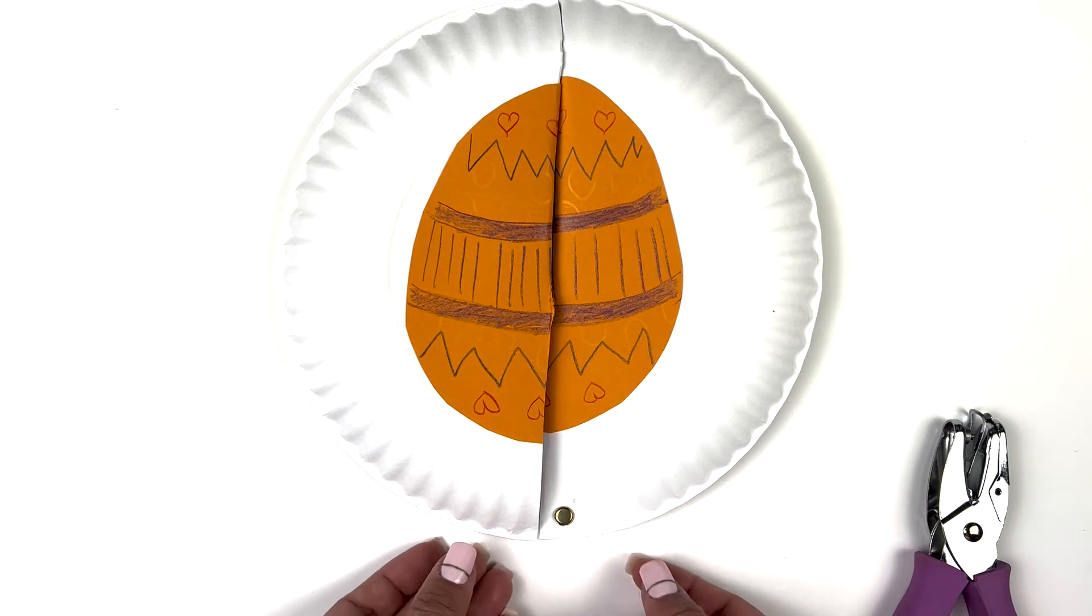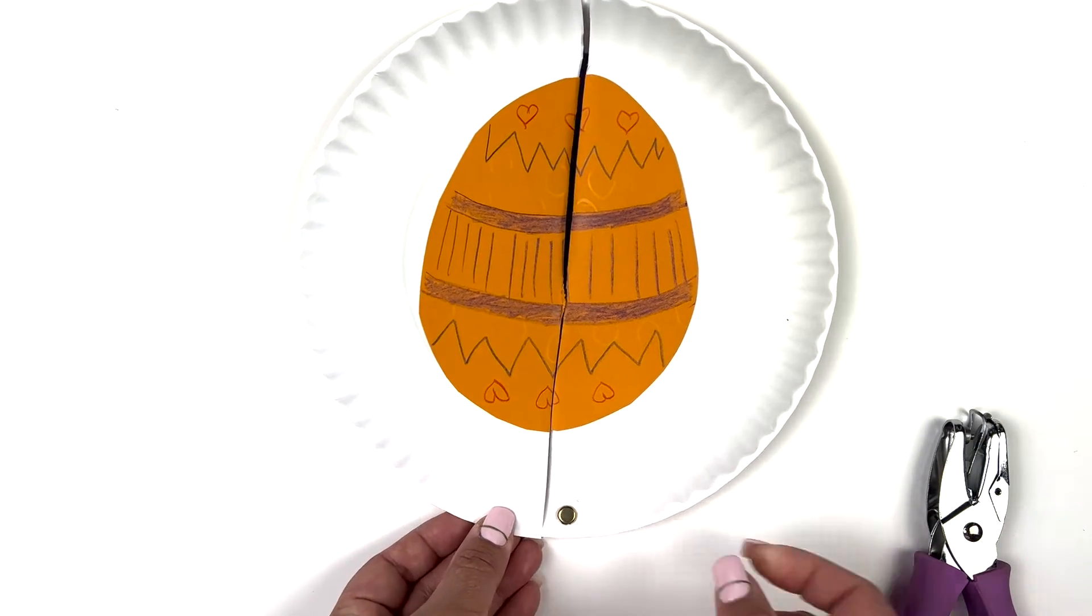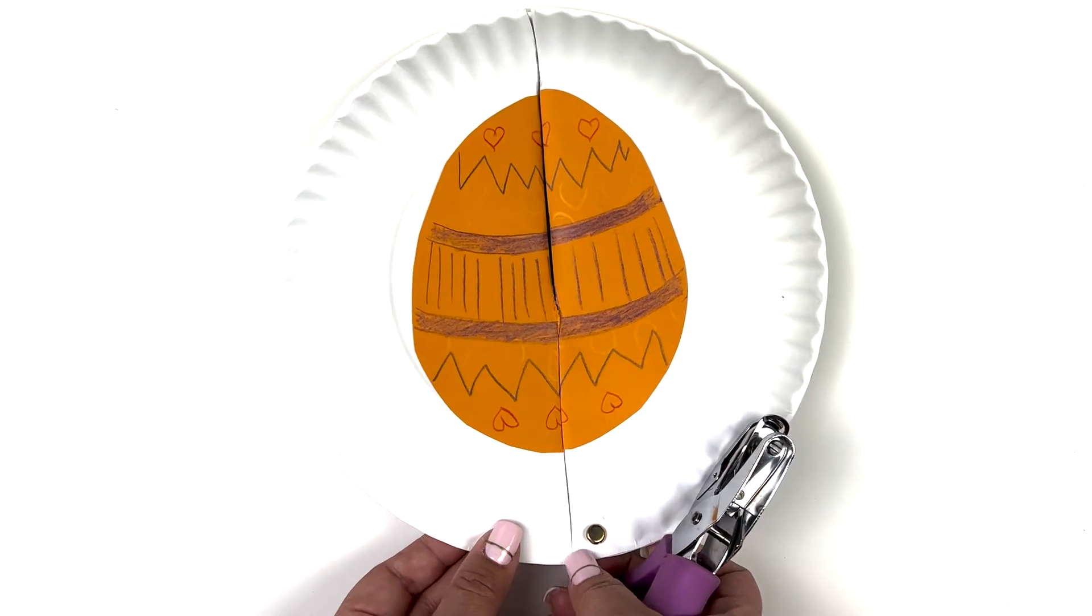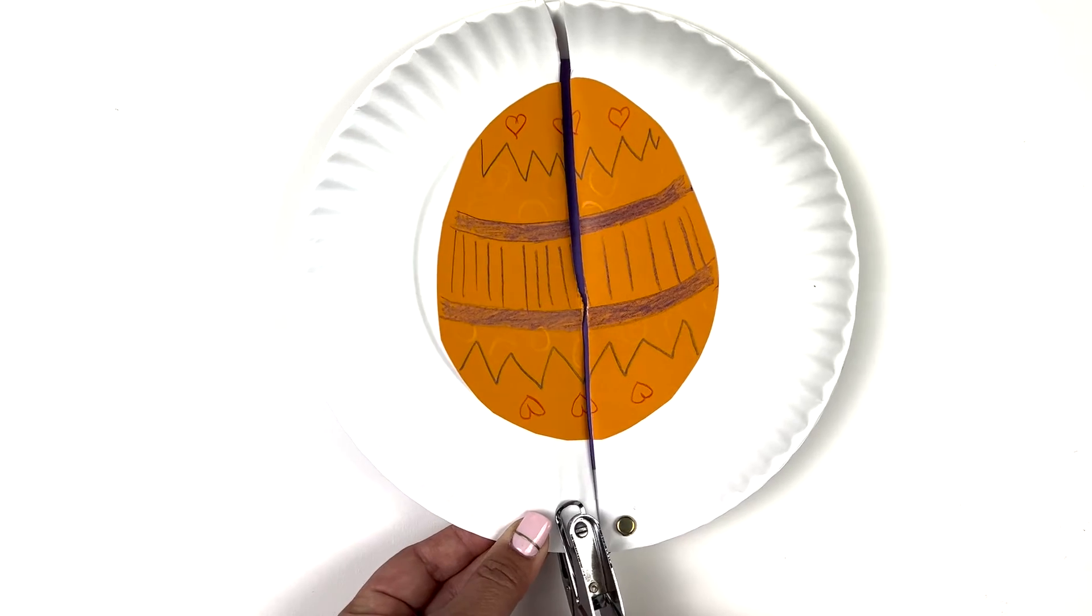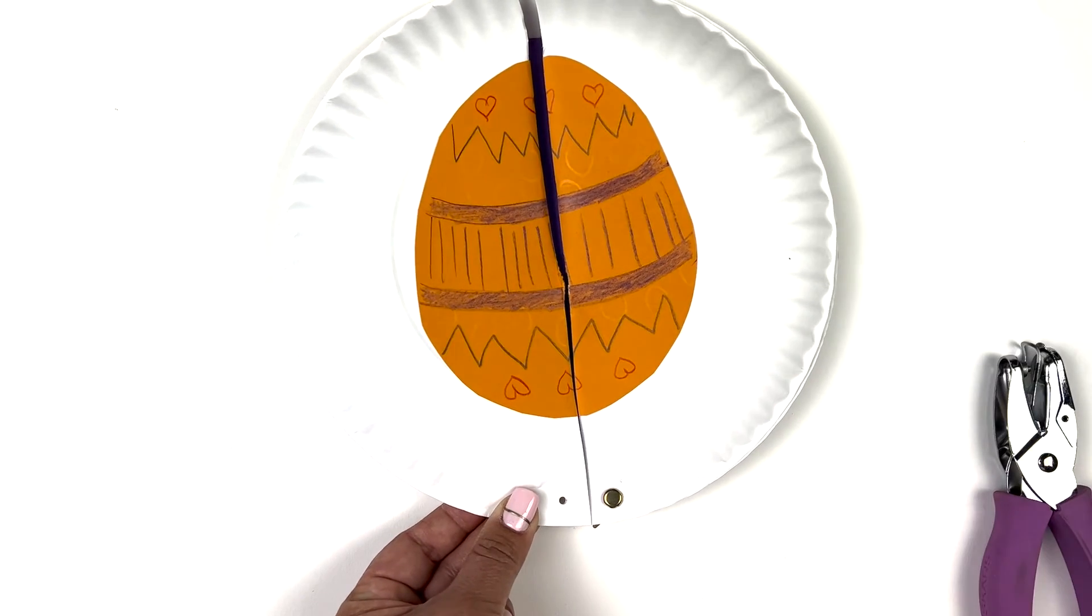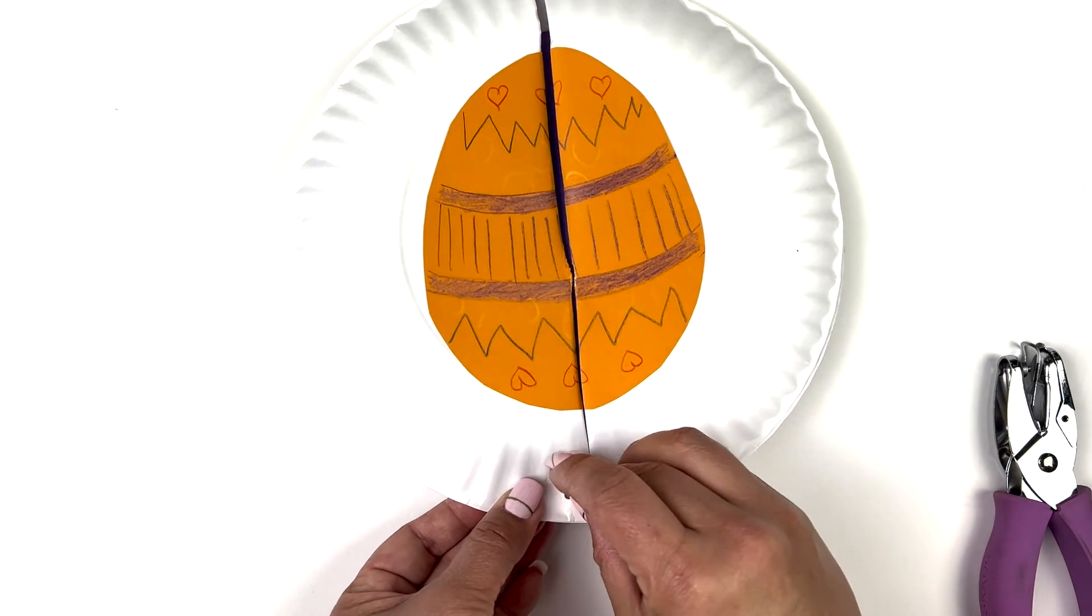Now, we're going to line that up and we're going to hole punch it over here. Put the paper fastener in place.